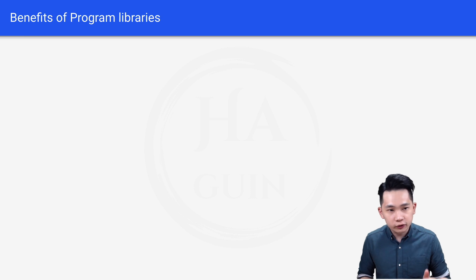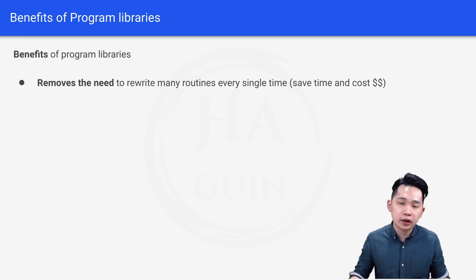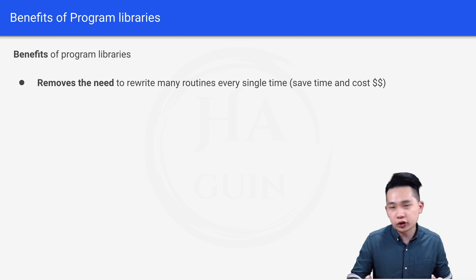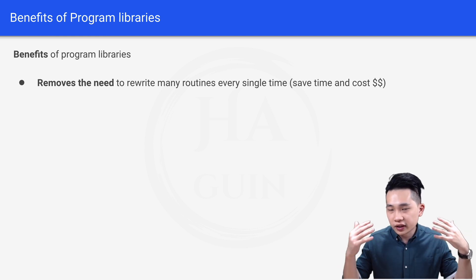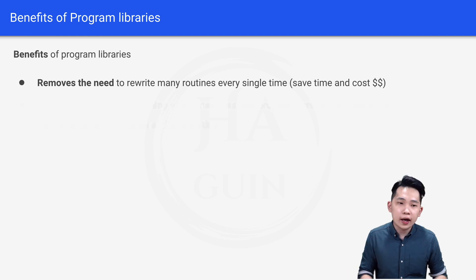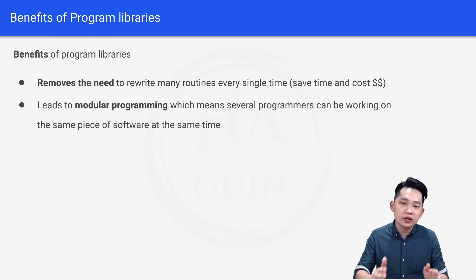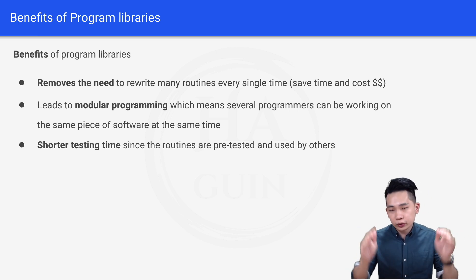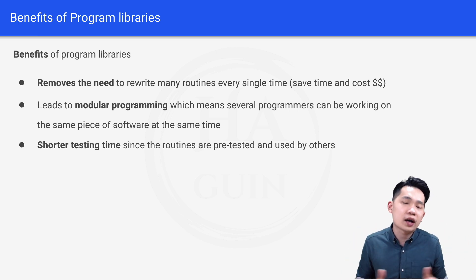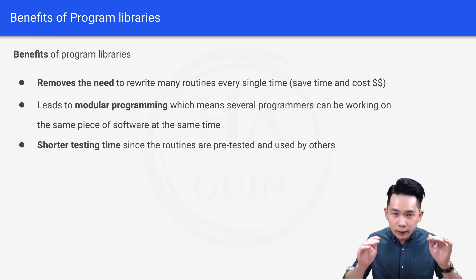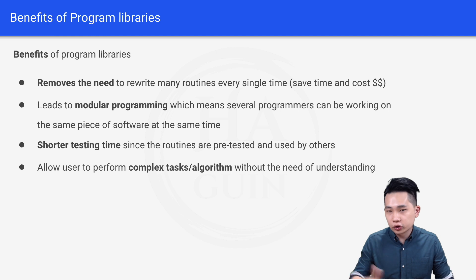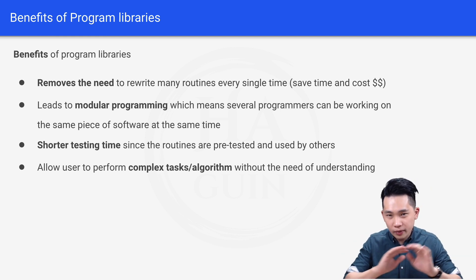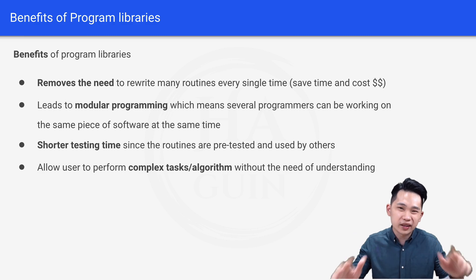The benefits of program libraries: first, it removes the need to rewrite many routines every single time, saving time and cost. It also leads to modular programming, where several programmers can work on the same piece of software simultaneously. It allows shorter testing time since the routines are pre-tested and used by others, meaning bugs have already been addressed. Finally, it allows users to perform complex tasks or algorithms without needing to understand the underlying formula or calculation.